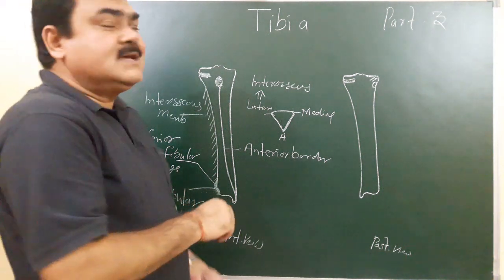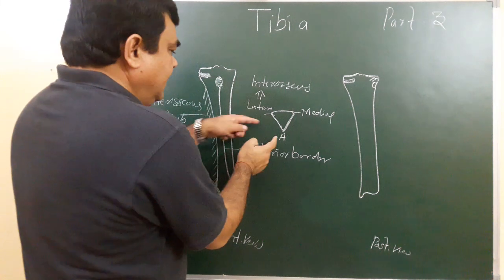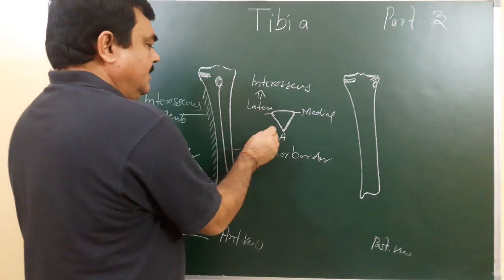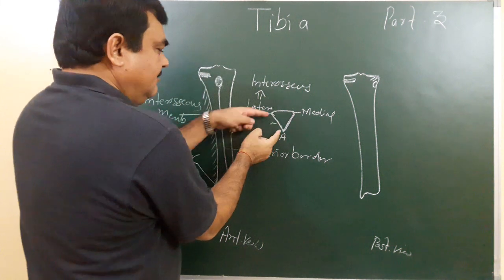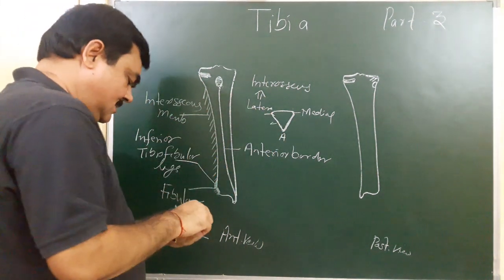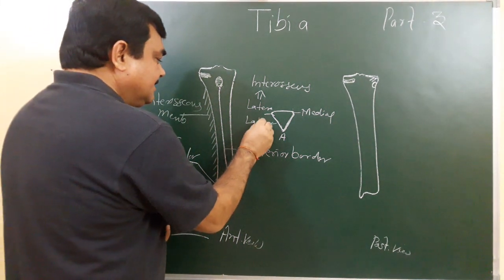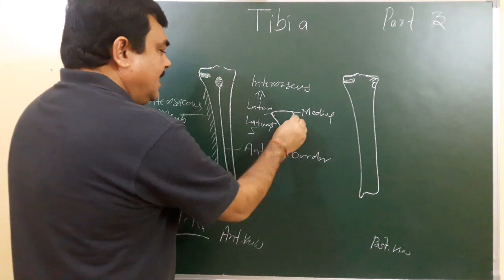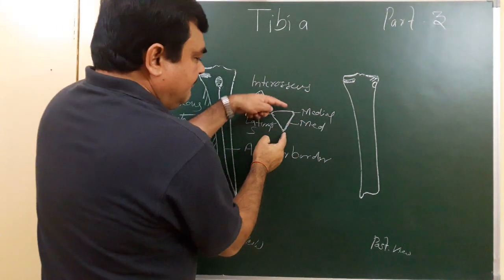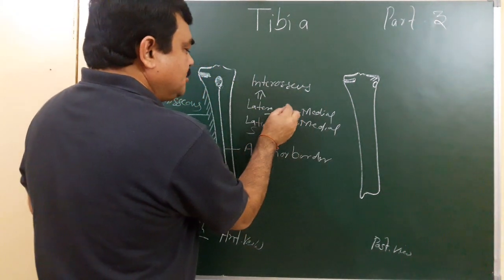Now we will discuss about the surfaces. Between the anterior and lateral border, from here to here, this surface is the lateral surface. And this is the medial surface, from here to here. And this is the posterior surface.